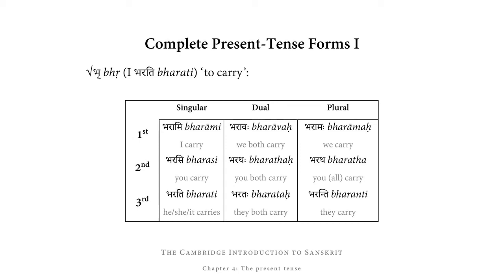Going one line up, we have the stem bhara with the second person endings si, taḥ, and ta, giving us bharasi, bharataḥ, and bharata. Now the reason I started at the bottom and look at the first persons last is because here we have one slightly unexpected thing: we don't have bhara plus mi, bhara plus vaḥ, and bhara plus maḥ, but instead the final 'a' of the stem has been lengthened to 'ā.'